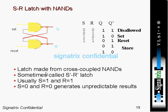We'll start with the SR latch with NAND gates. The analysis is the same. When both inputs are zero, both outputs are one. This is an invalid situation — you want Q and Q' to be complementary. Here when you apply both inputs as zero, the output comes as one-one, which is the inverse of what happens in the NOR case.